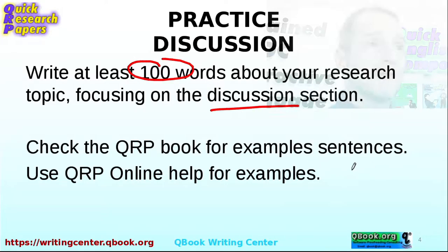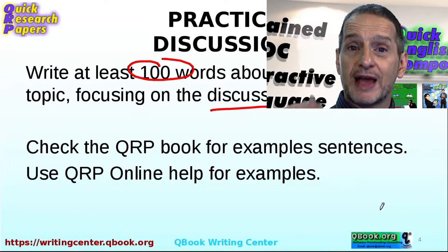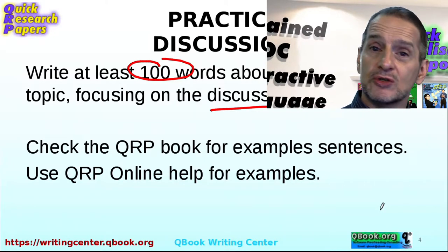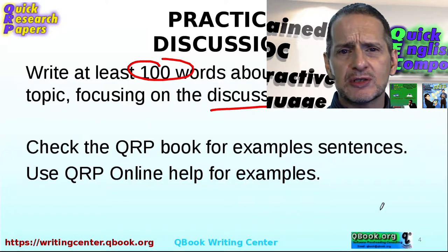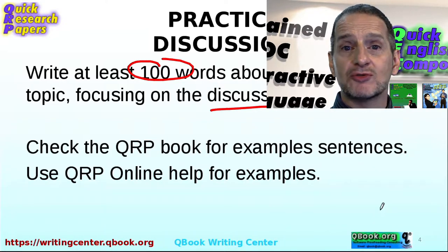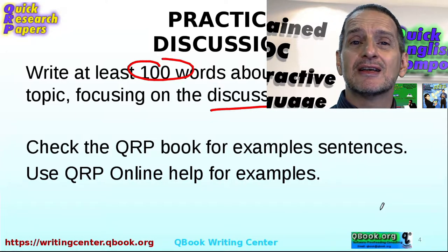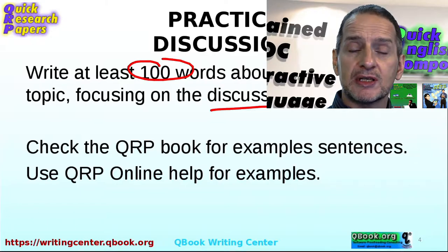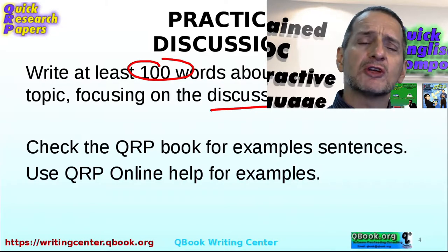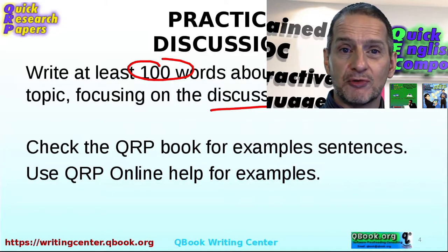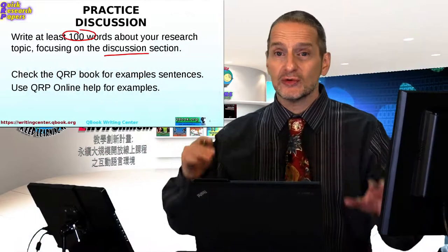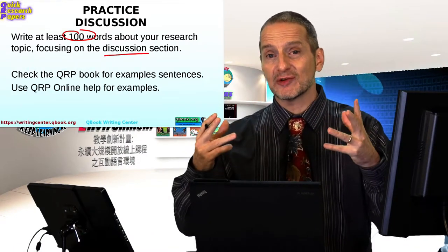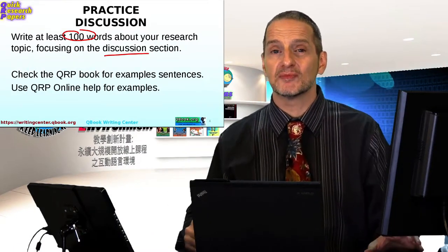Remember, if you have a research topic for your actual research, that's great — you can use that. If you don't have a research topic because you're just practicing writing, then go ahead and see if you can find a topic in Google Scholar. Something you're interested in would be great. After you get a good topic, go ahead and think about it and then think about what the discussion could be.